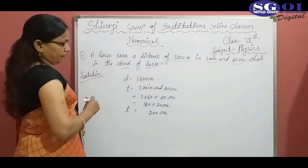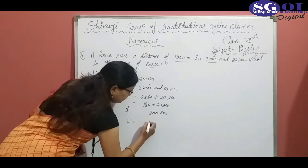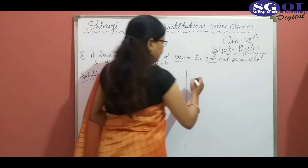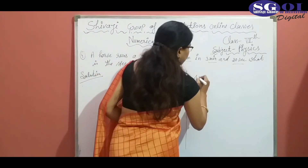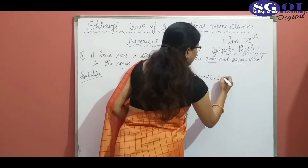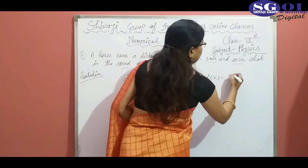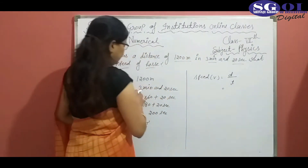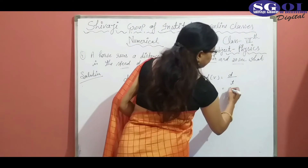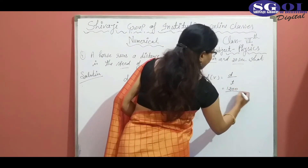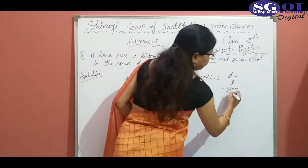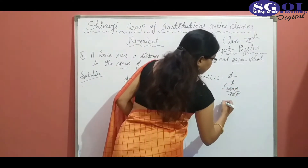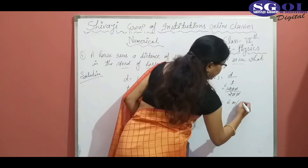And we have to find out speed. As we know that the formula of speed is equal to distance divided by time. Here, distance is 1200 and time is 200. After dividing, we get 6 meter per second.